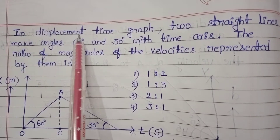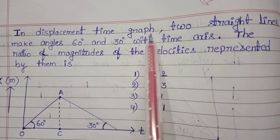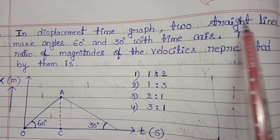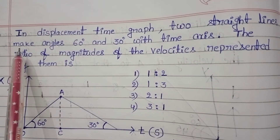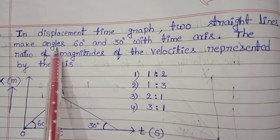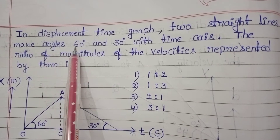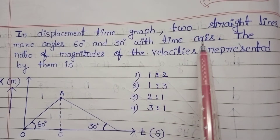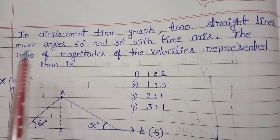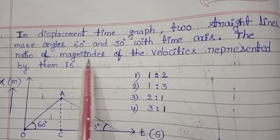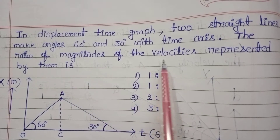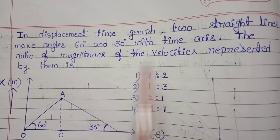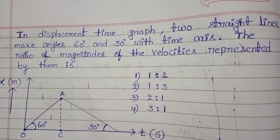In a displacement-time graph, two straight lines make angles 60 degrees and 30 degrees with the time axis. We need to find the ratio of magnitudes of the velocities represented by them.